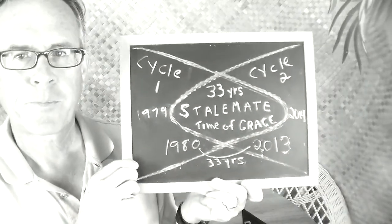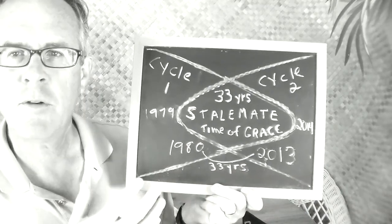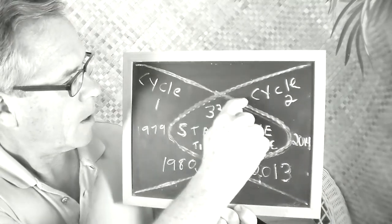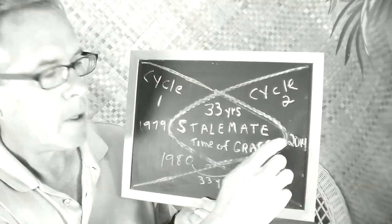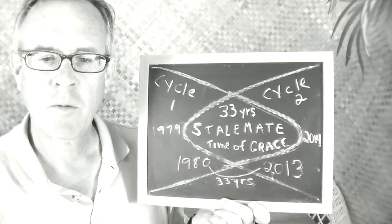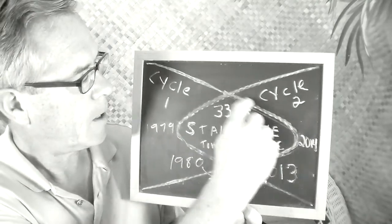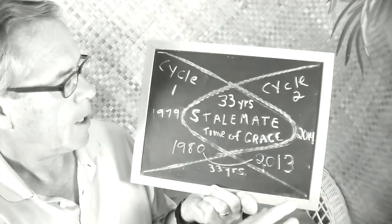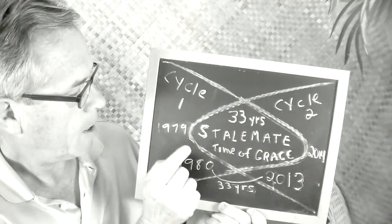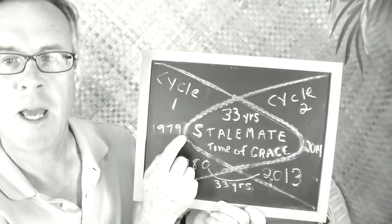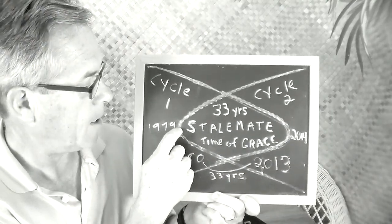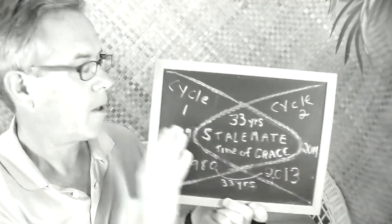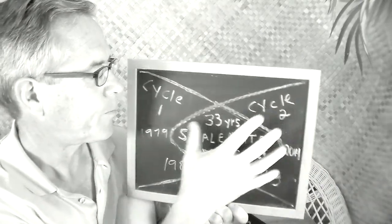What we have here is a depiction of two cycles overlapping. This cycle here — cycle one — goes up till basically October of 2013, and extends all the way to just before 2014. This is cycle one. Cycle two started basically in 1980.